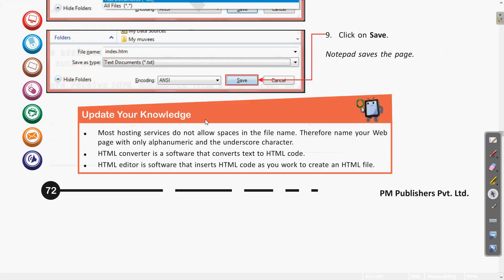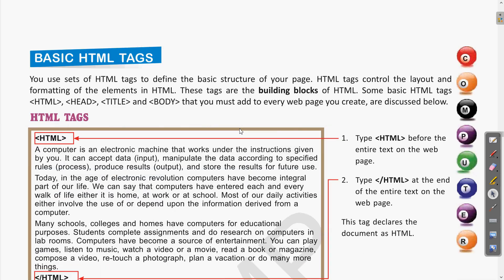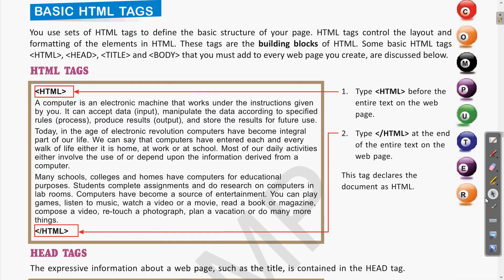Let us see the basic use of HTML tags. You can use a set of HTML tags to define the basic structure of your page. HTML tags control the layout and formatting of elements in HTML. Suppose we write the HTML tag at the beginning and end — a normal text written this way will be converted into an HTML page and can appear in the web browser. If you use the head tag, title tag, or body tag, these give the layout of the web page. The title appears at the top; body content appears in the web page; formatting and layout of the web page is decided by the different tags used.